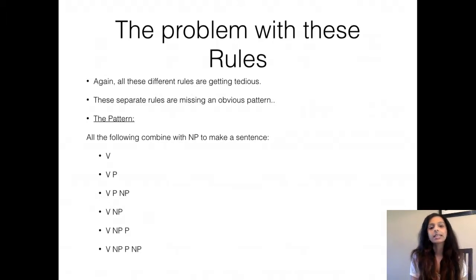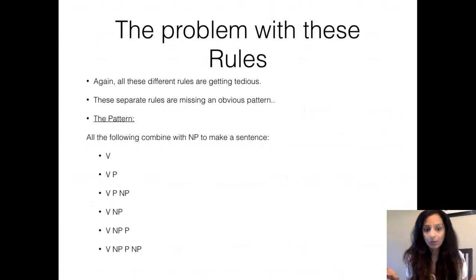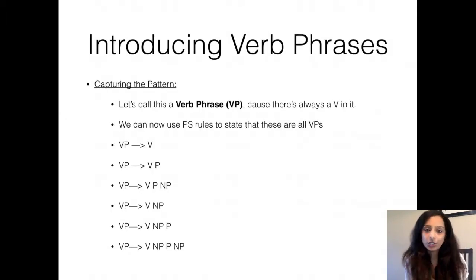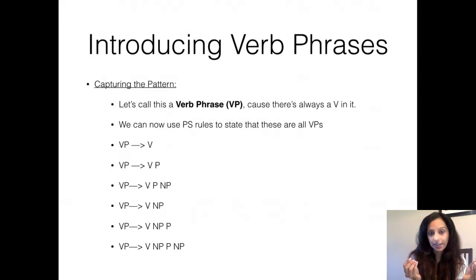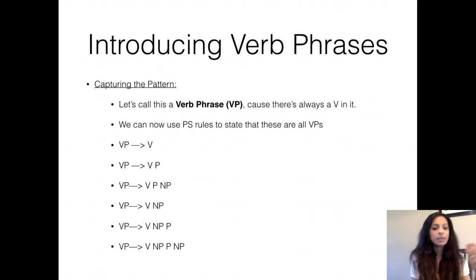The pattern we can find is: you can have just a verb by itself, a verb and then a preposition, a verb, a preposition, and a noun phrase, a verb and a noun phrase, a verb, a noun phrase, and a preposition, or a verb, a noun phrase, a preposition, and an NP. Just like we did with our noun phrase, we are going to combine all these things together and call this the verb phrase, or VP. We can write all these phrase structure rules for what a VP is — the VP is just a V, the VP is a V and a P, and so on.